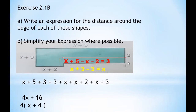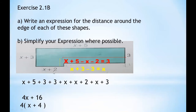Let's find the first missing side. I know the full length of the opposite side, which is x+5. I also know part of that side is x+2, but I don't know the remaining part. So to find this missing portion, I take the longest side x+5 and subtract x+2 from it.